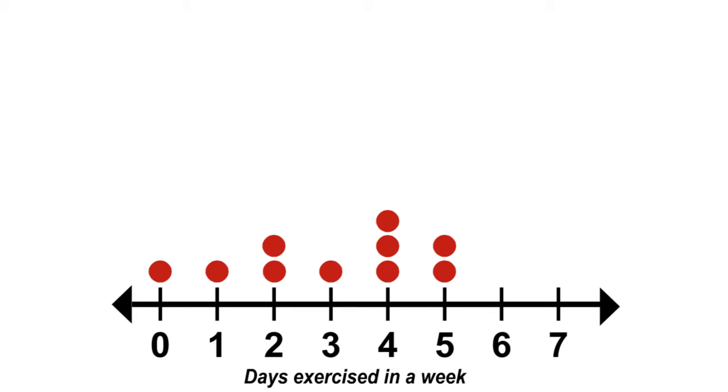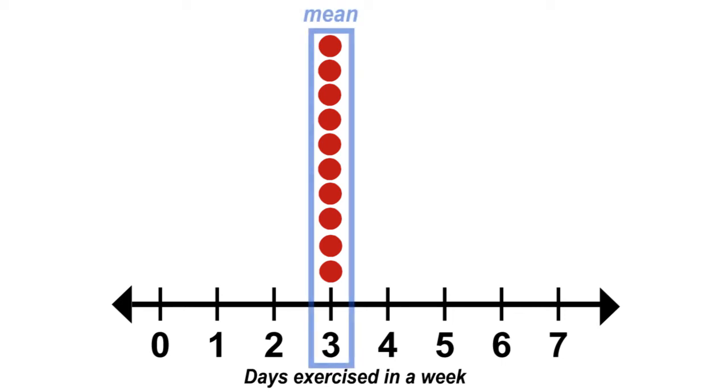Rather than using the formula to calculate the mean, the balance point can be found by moving counters one by one towards the center. Start with one counter on one side and move it in towards the center, then move one counter from the other side and move it towards the center. Continuing to do this while alternating sides will move the counters toward the balance point. The balance point, or mean, is 3.